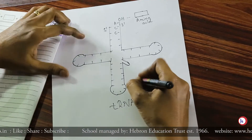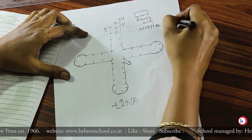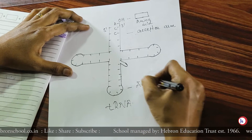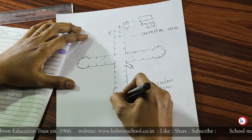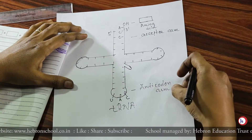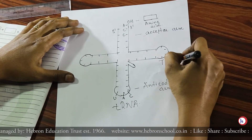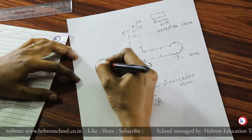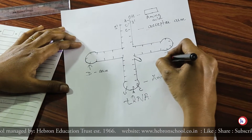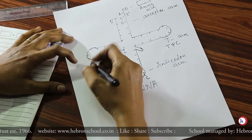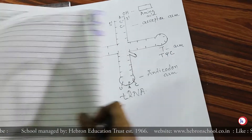Opposite to the amino acid acceptor arm, the anticodon arm is present. The anticodon — for example UAC — is present on this anticodon arm. The other two arms are the T arm and the D arm. The T arm is also called the T-psi-C arm, and the D arm is also called the DHU arm.